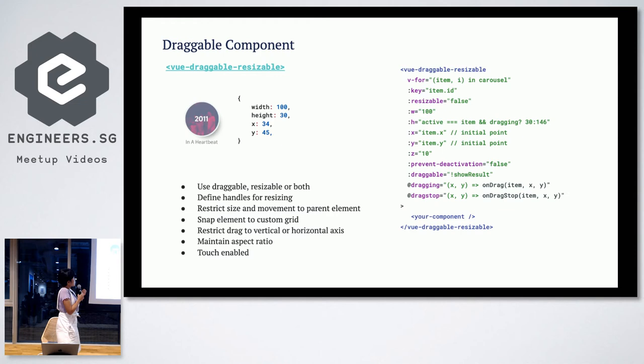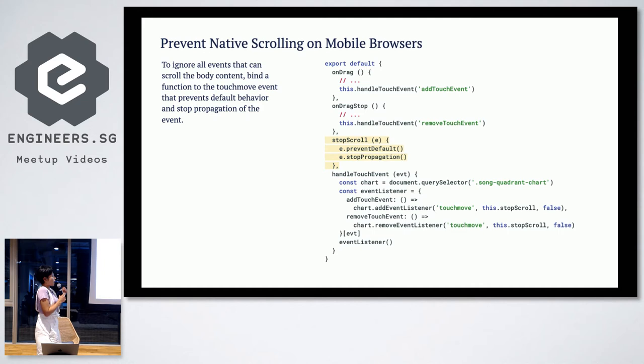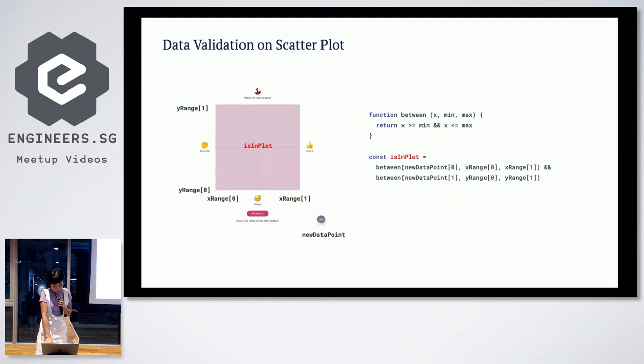But it also had some problems. If you wanted to prevent native scrolling on mobile browsers, it is very important to add stopPropagation and preventDefault. When I ignored this function here, when I drag and drop the circle inside, the mobile didn't work properly. After I applied this solution, there was no problem anymore. This is one solution that I solved.